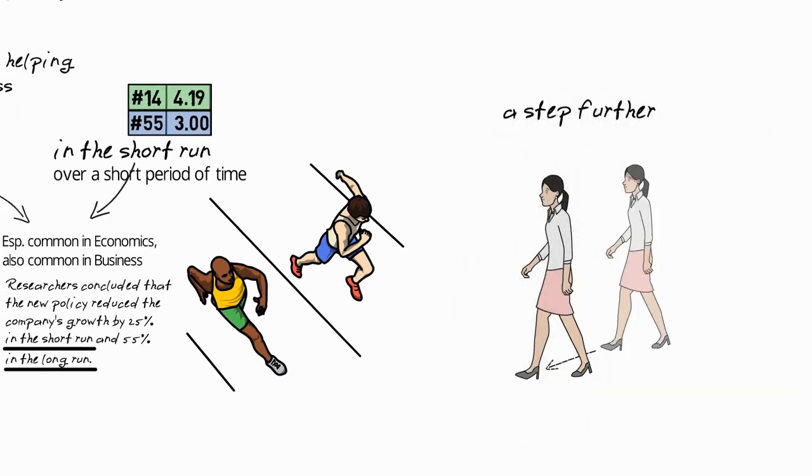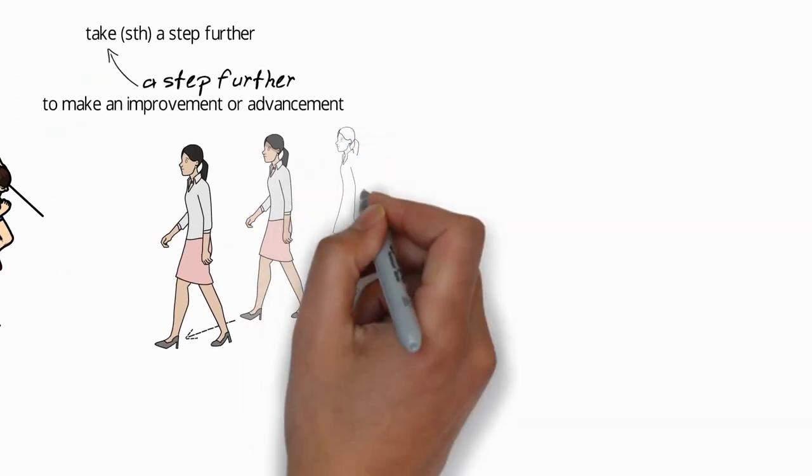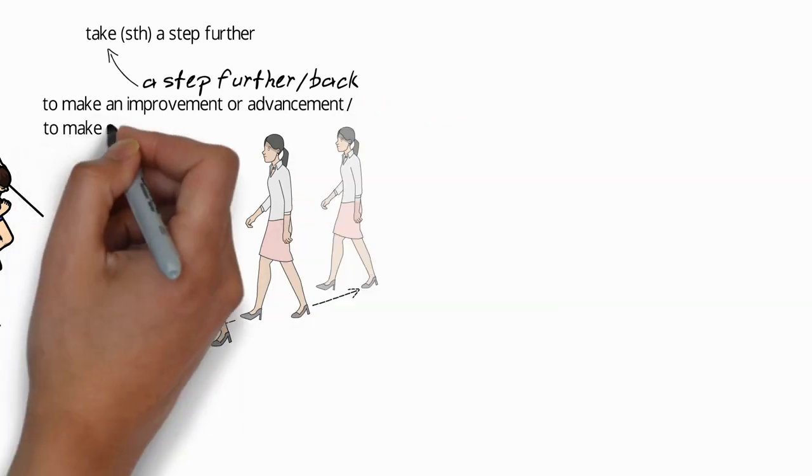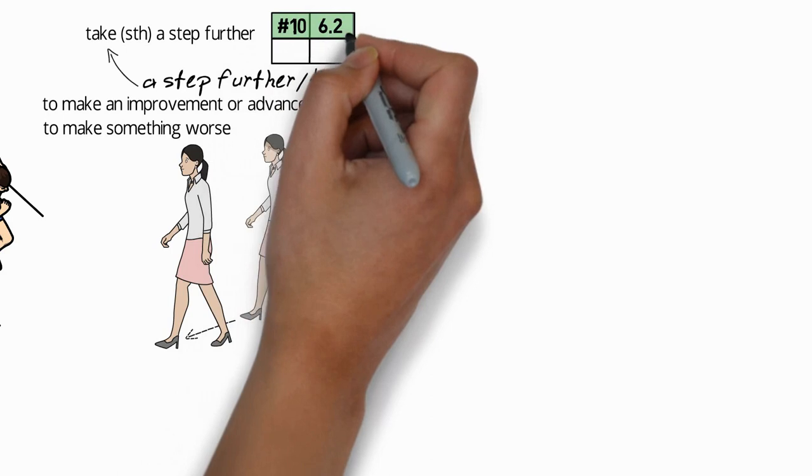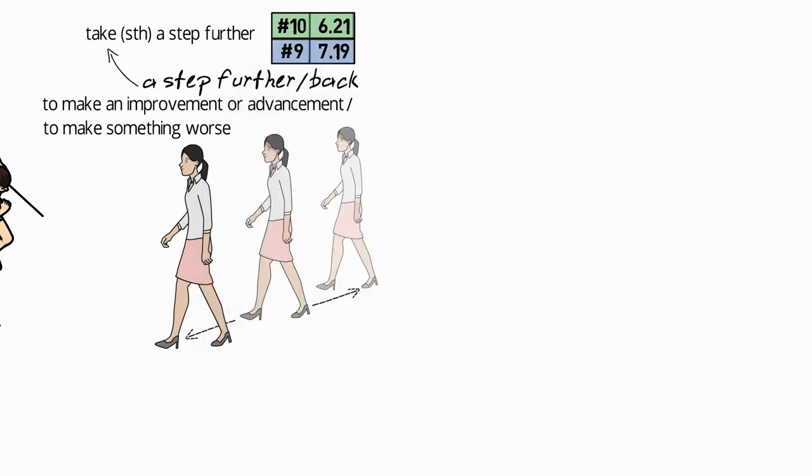So in this example, the long run effects are more significant than those in the short run. The next action idiom is a step further, which means to make an improvement or advancement, and this often combines with the verb take: take something a step further. And there's also the idiom a step back, which means to make something worse, which is the opposite of a step further. And Miller's study actually combined these two idioms.